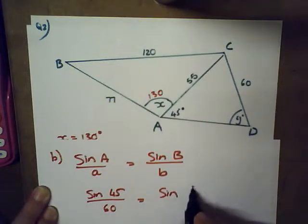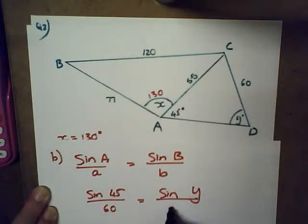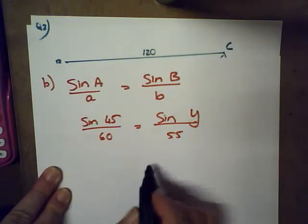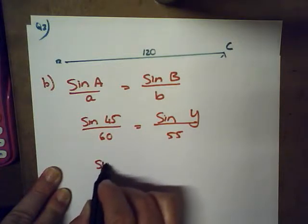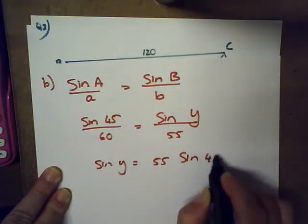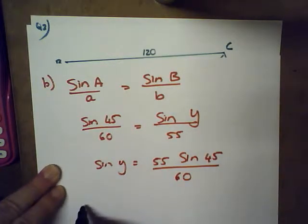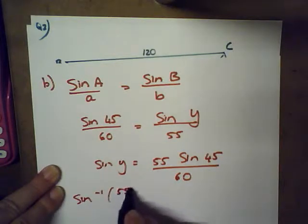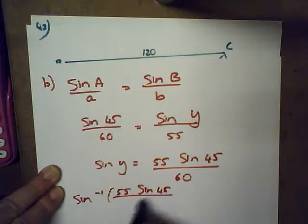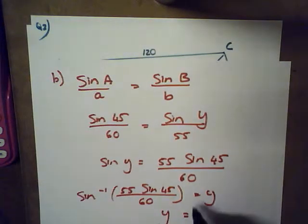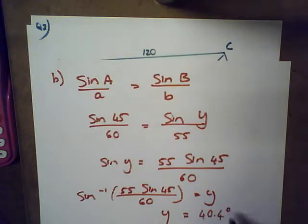Multiplying both sides by 55: sine y equals 55 times sine 45 over 60. Taking the inverse sine gives y equals 40.4 degrees. I'll substitute that onto the sketch as well.